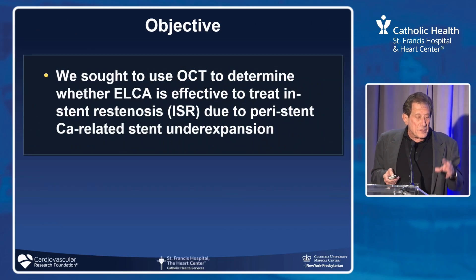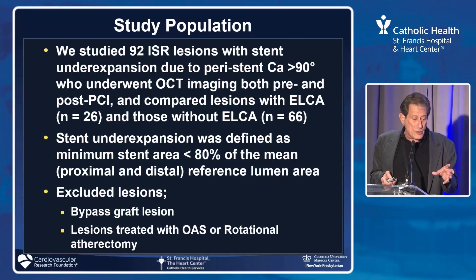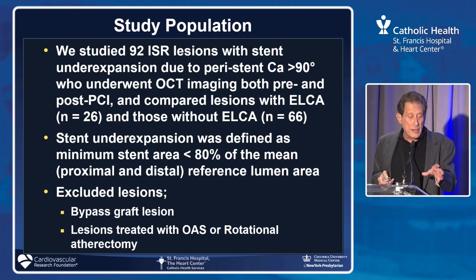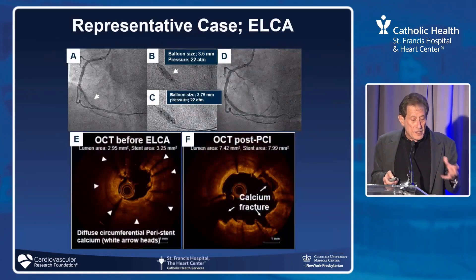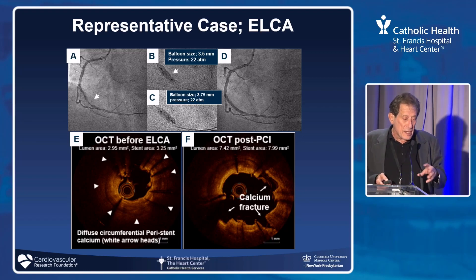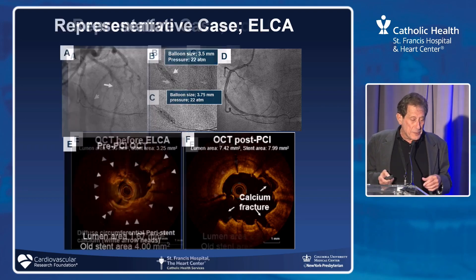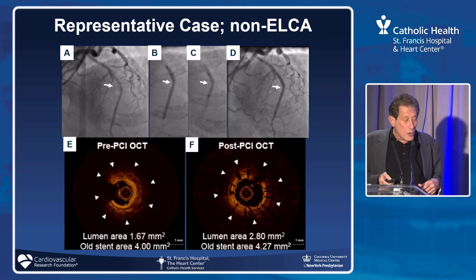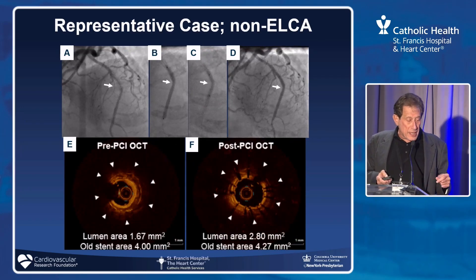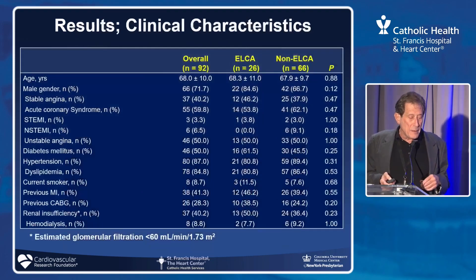This was to look at whether ELCA has any effect on treating in-stent restenosis with peristent calcification using OCT — 92 lesions, 26 with ELCA and 66 without. Here is the OCT before ELCA: you see the calcification encasing the stent, and after ELCA and ballooning you can see massive fractures. In the control group, the area went from just 1.7 to about 2.8, and the stent area increased only minimally.